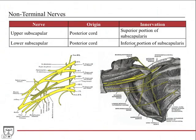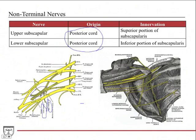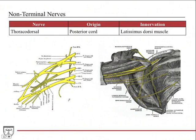The upper and lower subscapular nerves both come from the posterior cord. From proximal to distal on the posterior cord you have: upper subscapular, then the thoracodorsal nerve, then the lower subscapular. The upper subscapular innervates the superior portion of the subscapularis muscle, and the lower subscapular innervates the inferior portion. The thoracodorsal nerve, also sometimes called the long subscapular, innervates one muscle — the latissimus dorsi. This is an example of anatomy having multiple names for the same structure.